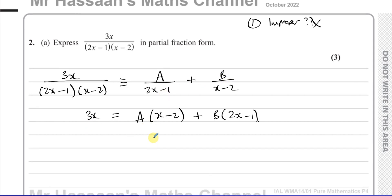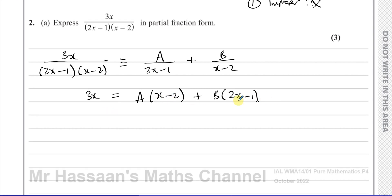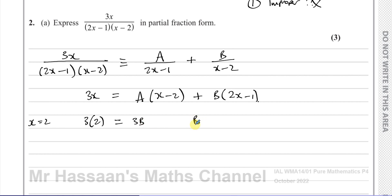The simplest approach here is to substitute a value that makes one bracket zero, eliminating one of the letters. If I choose x = 2, this bracket becomes 0 and a is eliminated. Substituting: 3×2 = 6 equals b×(2×2−1) = 3b, so b = 2.